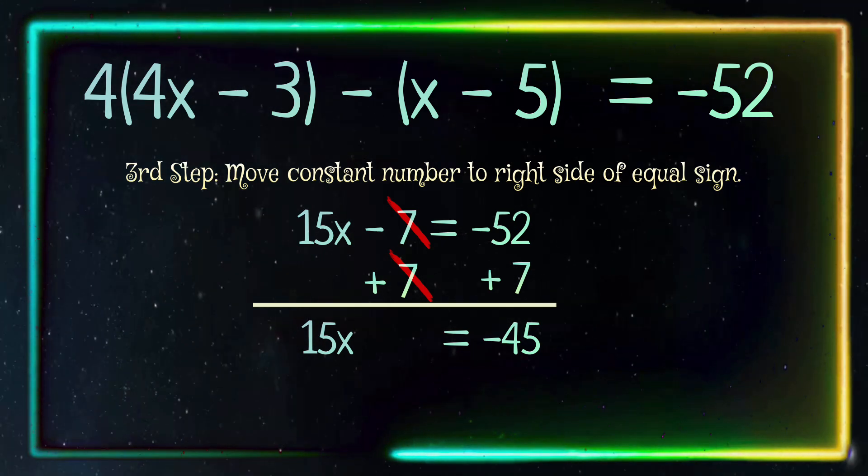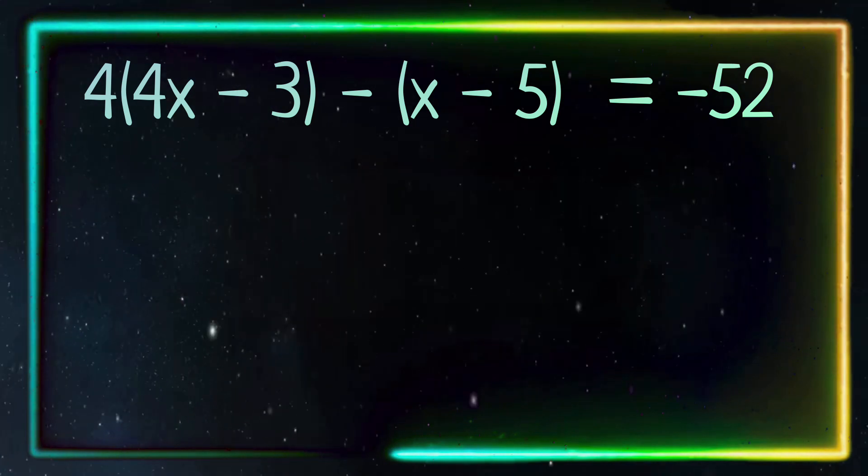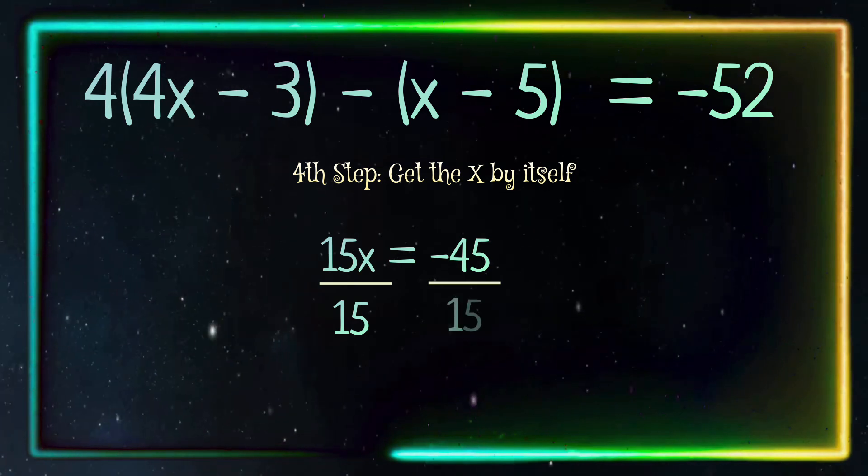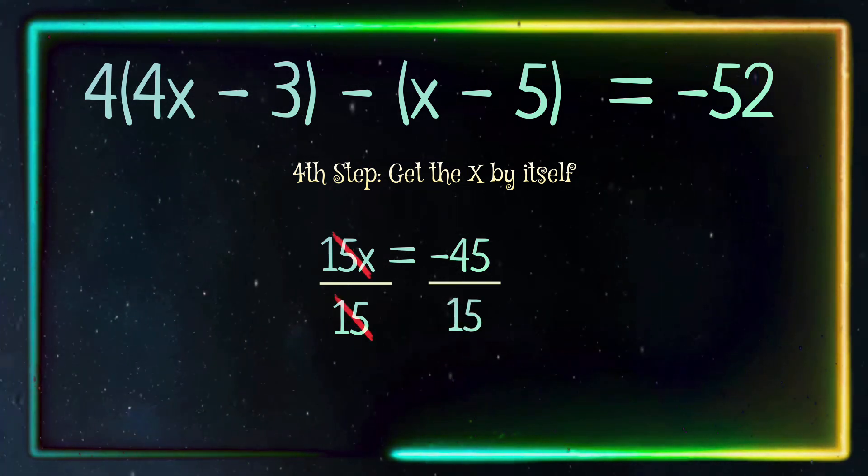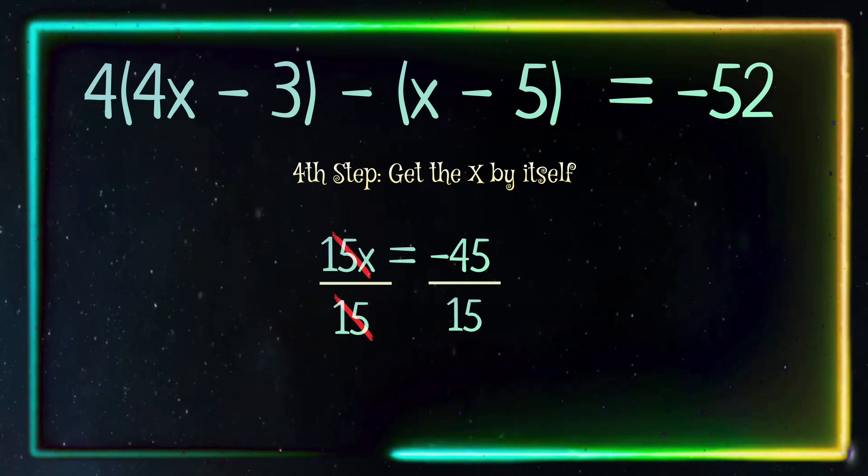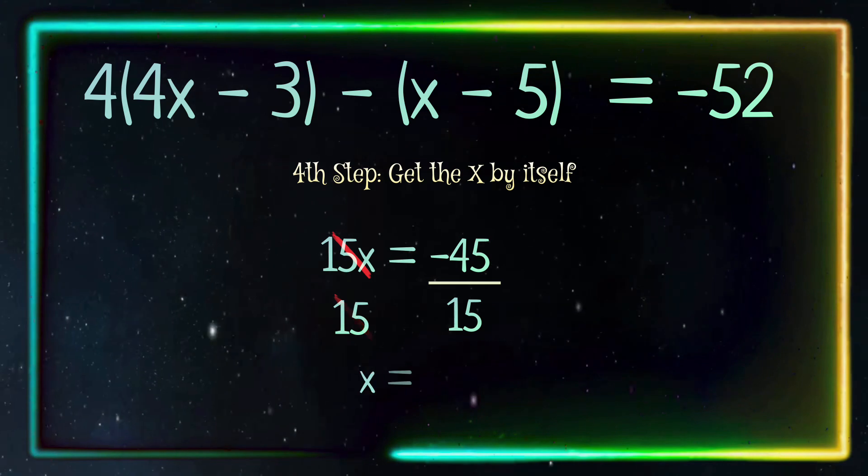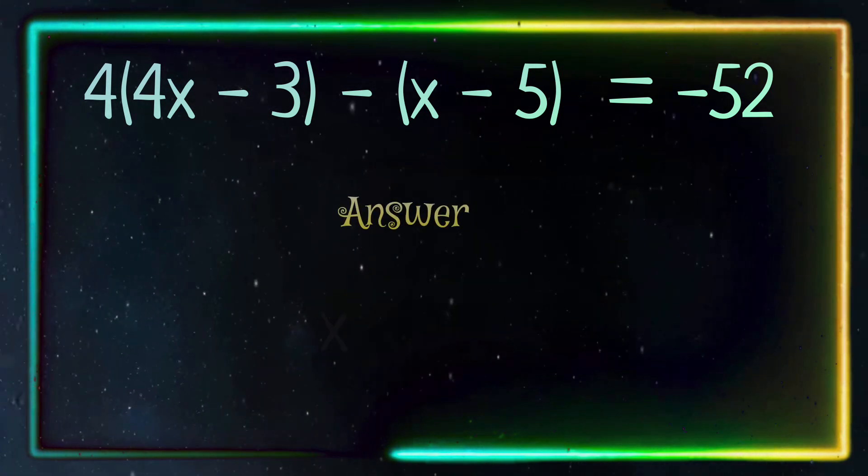Now we have 15x equals negative 45. We will divide both sides by 15 so we can get the x by itself. We cancel out the 15 on the left side. And on the right side we divide negative 45 by 15. And our answer is negative 3, making x negative 3.